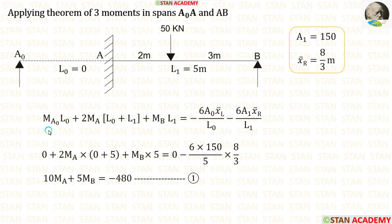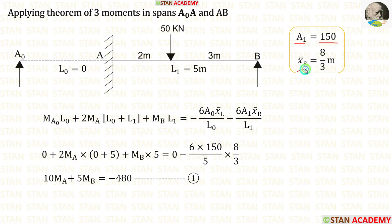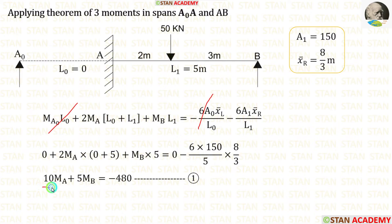Now let us apply the values in this equation. L0 is equal to 0 because it is an imaginary span. L1 is equal to 5 meters. Area 1 is equal to 150 and x-bar right is equal to 8/3. The terms for the imaginary span will be 0. Finally, we are making the first equation.